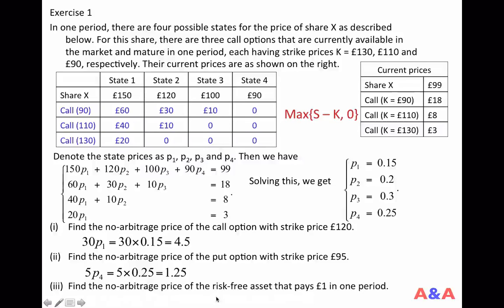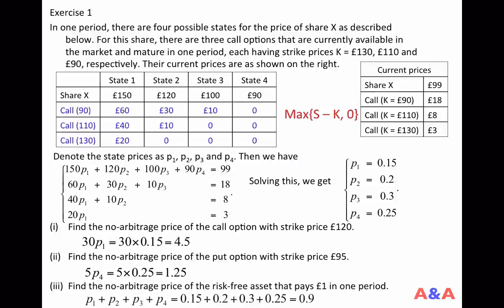For the risk-free asset that pays 1 pound for sure: holding this asset is equivalent to holding one of each state contingent claim. So its theoretical price is simply P1 + P2 + P3 + P4 = 0.15 + 0.20 + 0.30 + 0.25 = 0.90 pounds.